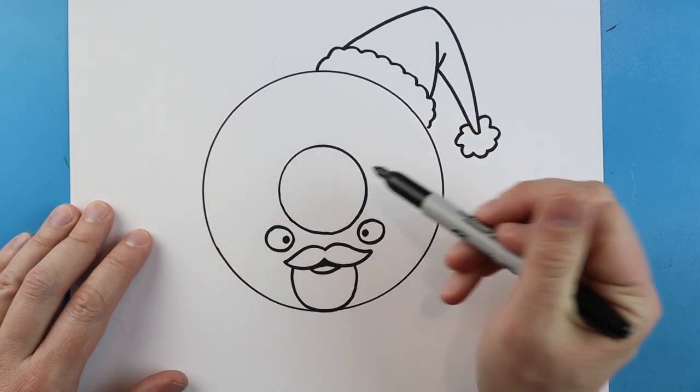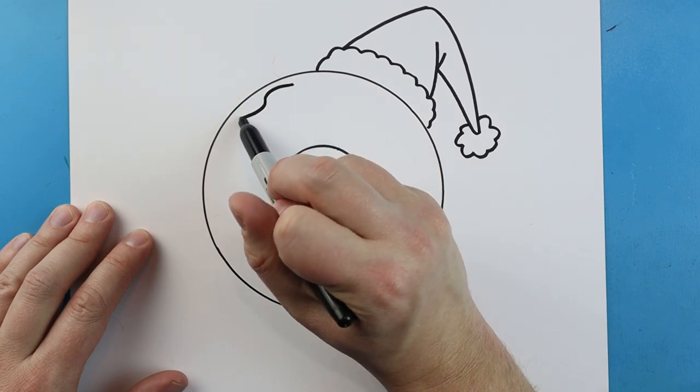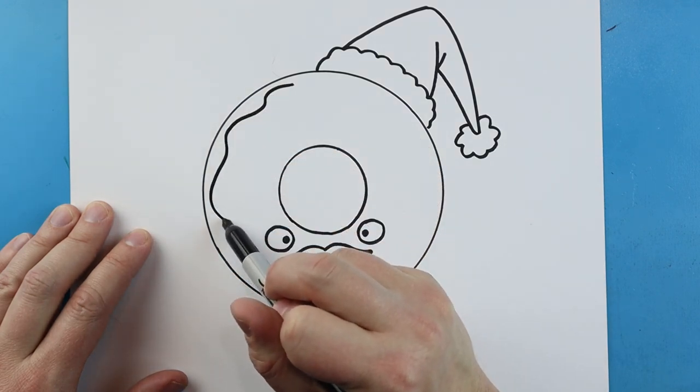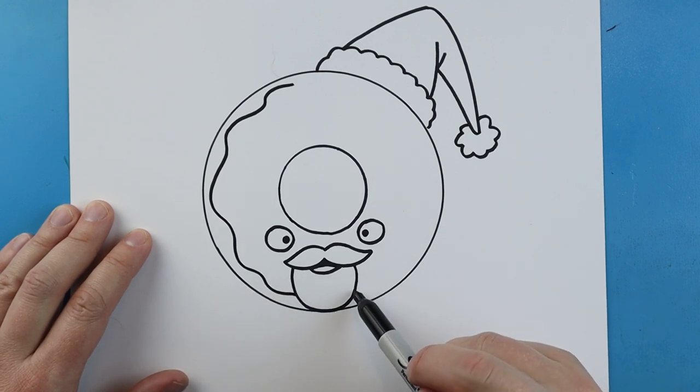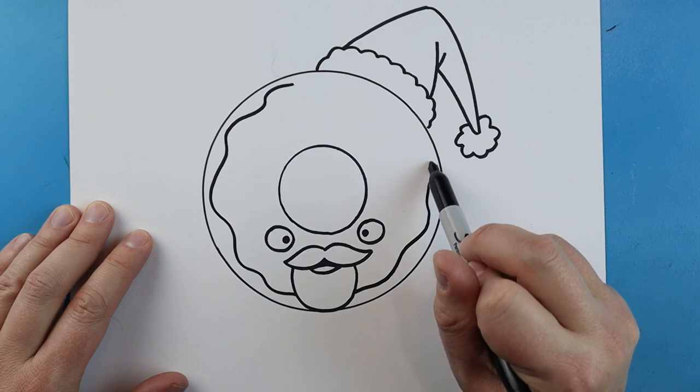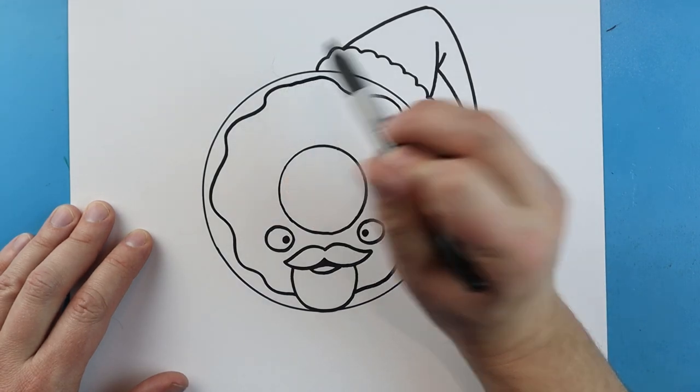Now we want to draw the icing. I'm going to begin here and we just want to make a nice big wavy line that's going to come all the way around here. I'm going to draw it right to here. I'm going to jump over the beard and we're going to bring it all the way back up to here and connect it.